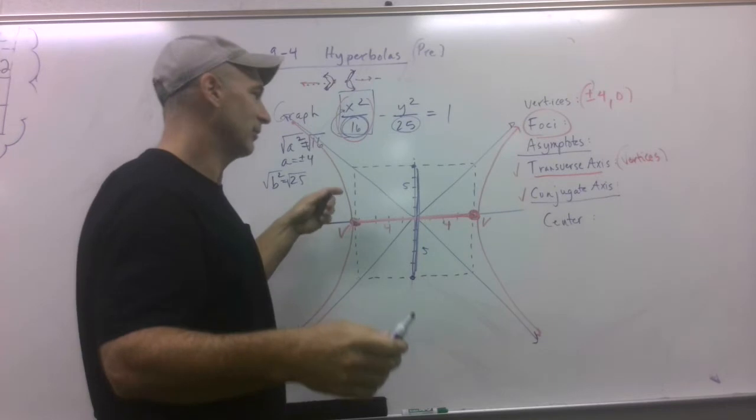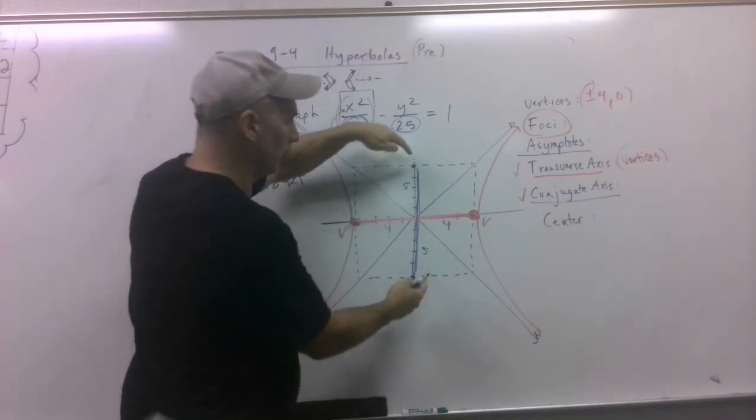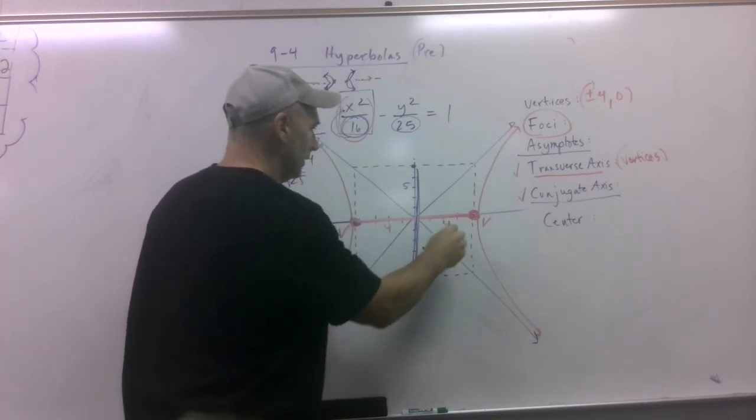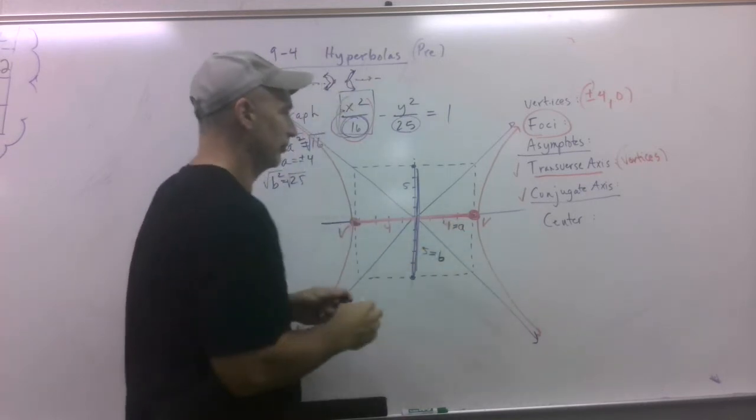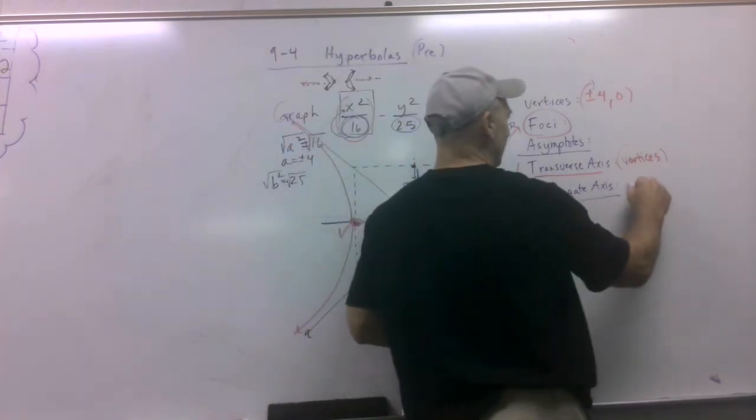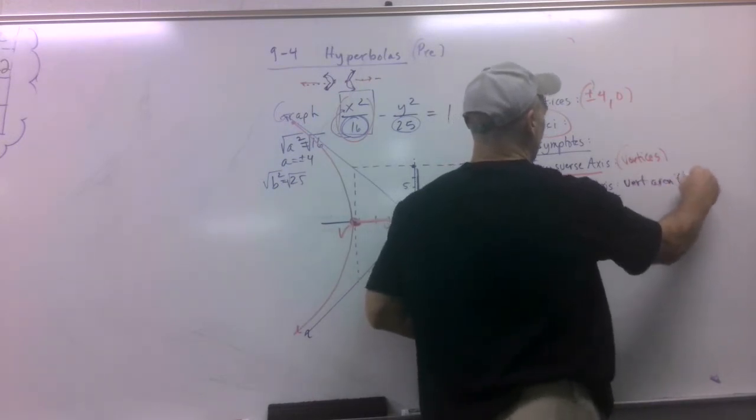And I know this is 5 and that's 5. So if they ask you, like, they tell you the conjugate axis is 10, and then you know this is 5, which tells you this is B and this is my A. There's a lot going on there. So this is simply the axis where the vertices aren't.